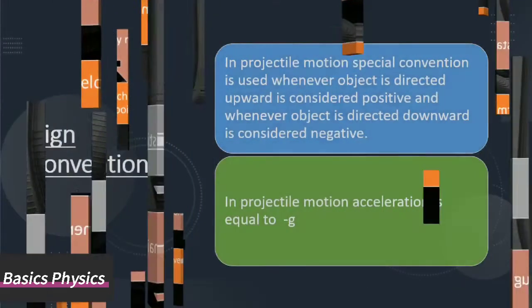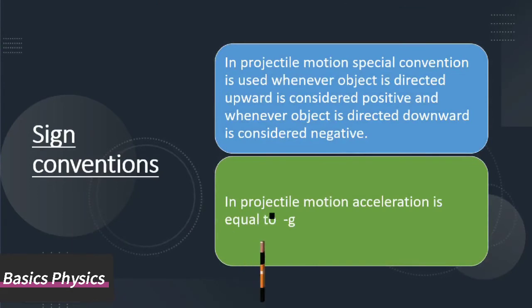In projectile motion, a special convention is used. Whenever an object is directed upward, it is considered positive. And whenever an object is directed downward, it is considered negative.